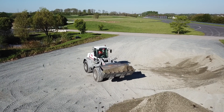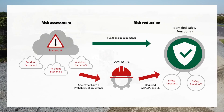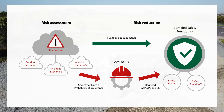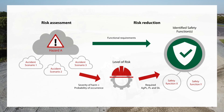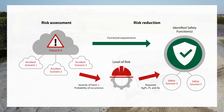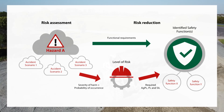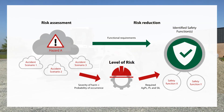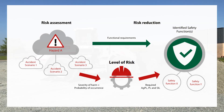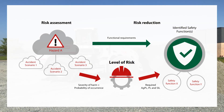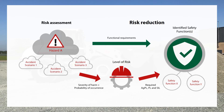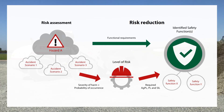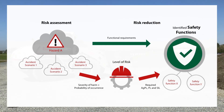First we consider the machine's operating conditions, working environments, driver behavior and many other relevant factors. We also look at foreseeable hazards and accident scenarios and evaluate any associated risks. After that it may be necessary to implement risk reduction — one example is applying safety functions.